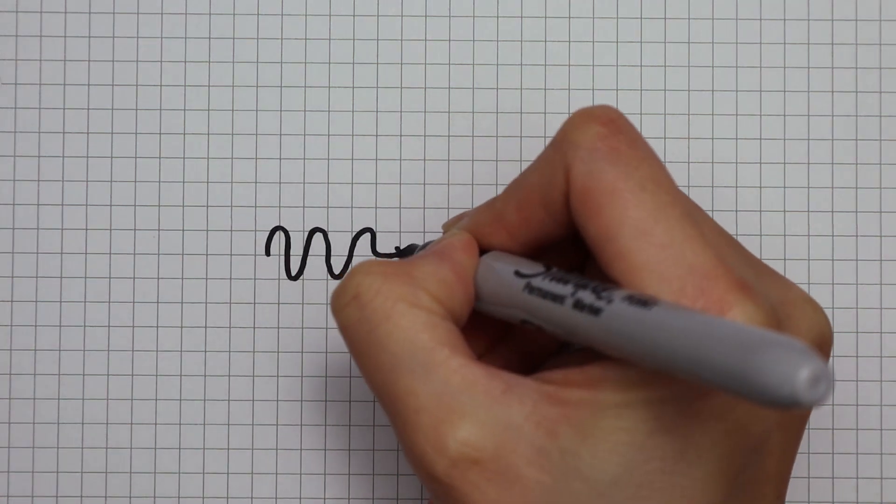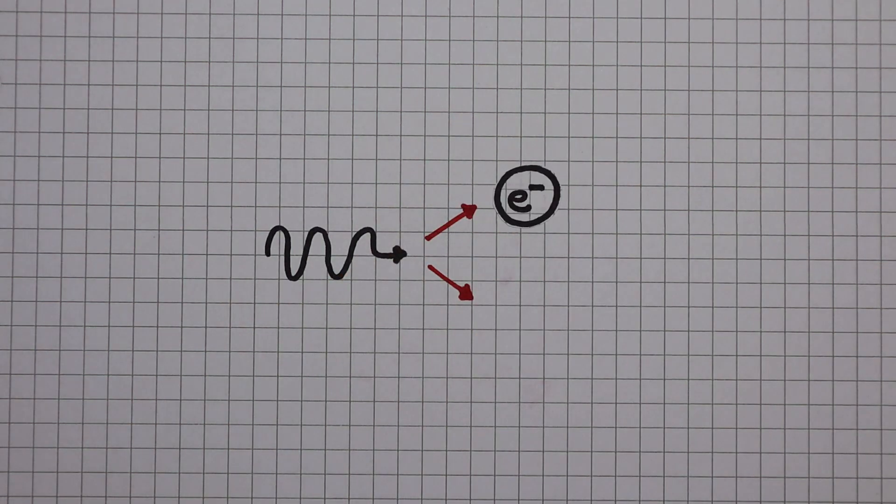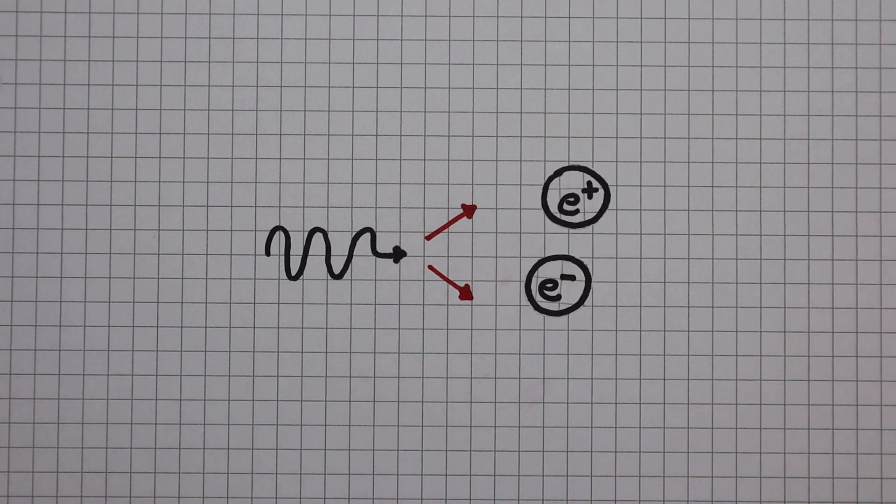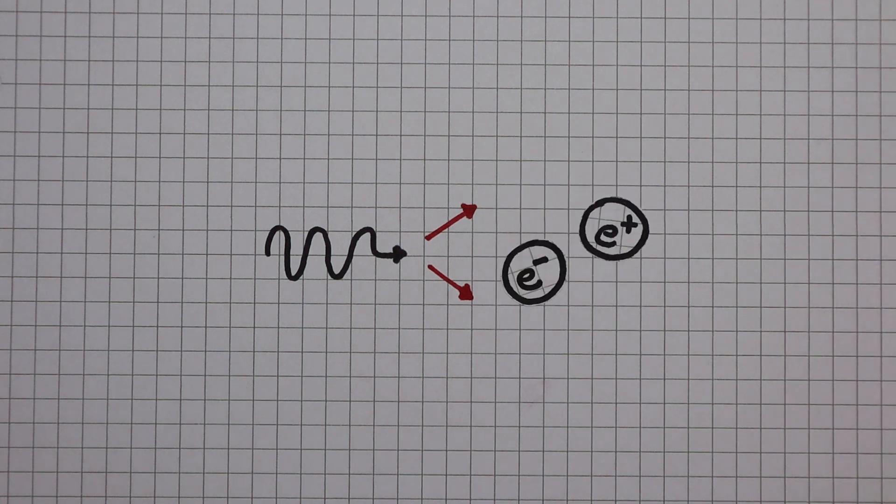Energy carried by a photon can be converted into an electron and a positron. This is known as pair production. And on a lucky day, particle physicists might even see them orbit around each other.